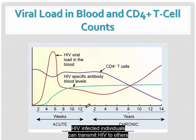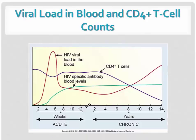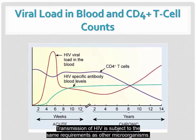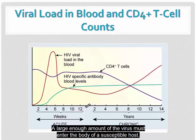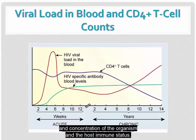HIV-infected individuals can transmit HIV to others within a few days after becoming infected. Transmission of HIV is subject to the same requirements as other microorganisms — a large enough amount of the virus must enter the body of a susceptible host. The infection is influenced by frequency of contact with the organism, volume, virulence, and concentration of the organism, and the host's immune status.